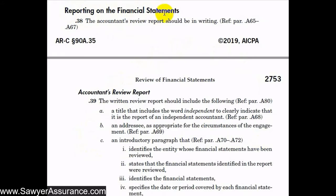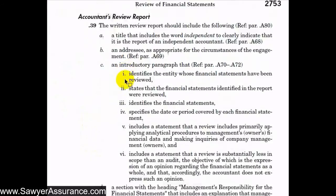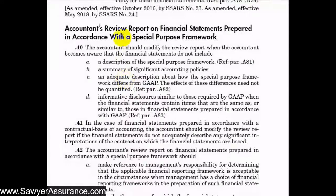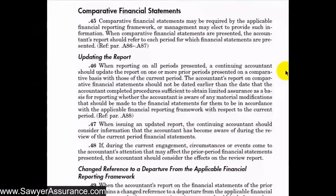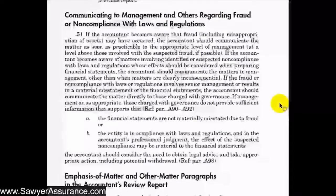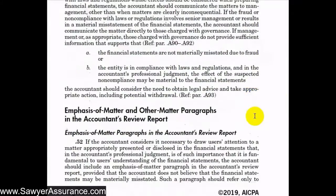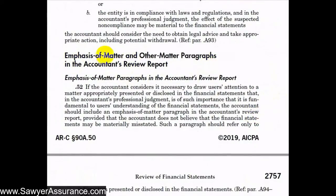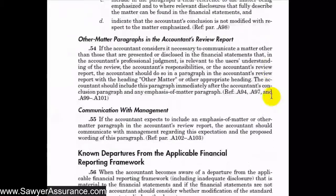First we'll cover the general review report requirements, then discuss circumstances where a client used a special purpose framework instead of a general purpose framework. We'll also discuss implications of using comparative financial statements, communicating to management and others regarding fraud and non-compliance with laws, and emphasis of matter or other matter paragraphs included in the review report for various circumstances.